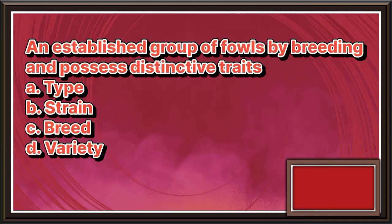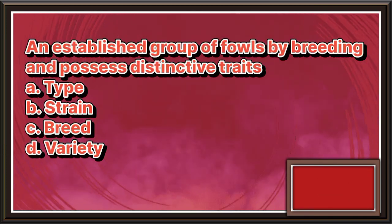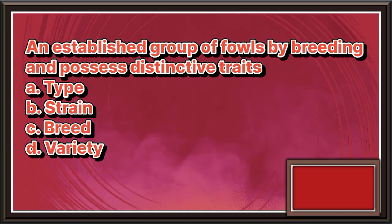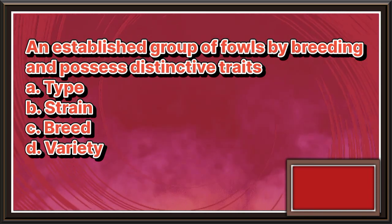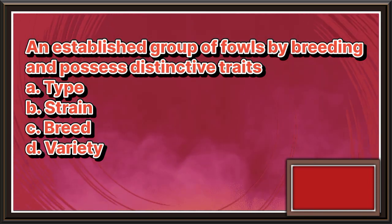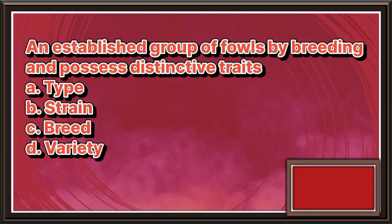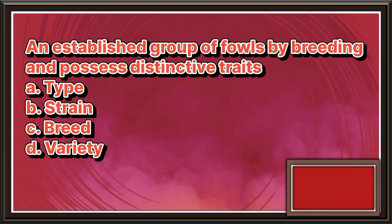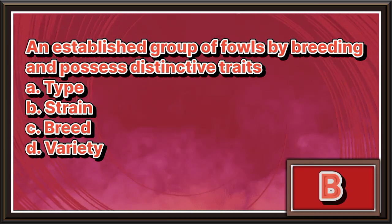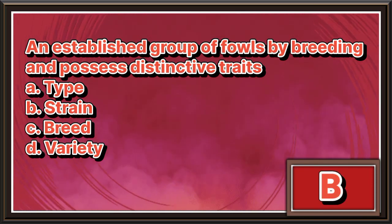An established group of fowls by breeding that possess distinctive traits. A. Type. B. Strain. C. Breed. D. Variety. The answer is letter B.